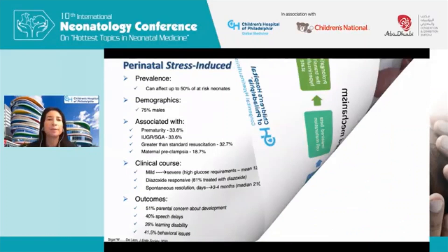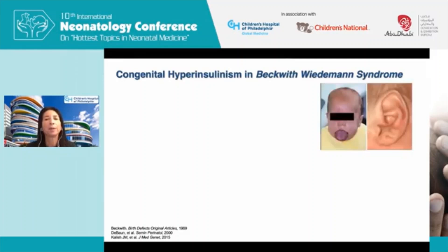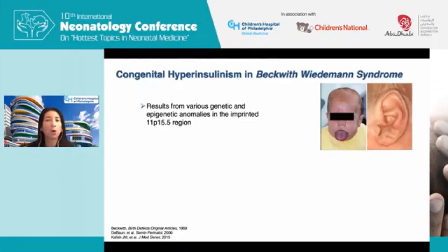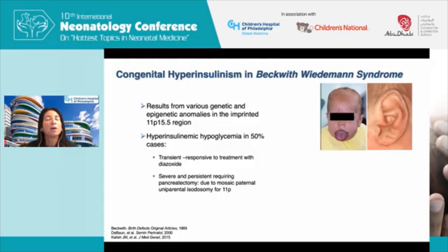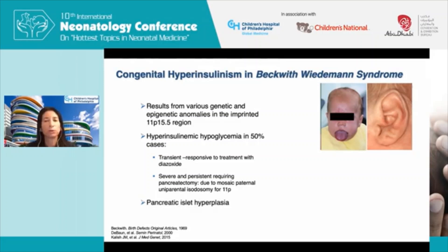Regarding congenital hyperinsulinism in Beckwith-Wiedemann syndrome: the syndrome results from various genetic and epigenetic anomalies in the imprinted 11p15.5 region, characterized by overgrowth including macroglossia, hemihypertrophy, and abdominal wall defects such as omphalocele or umbilical hernia. About 50% of babies with Beckwith-Wiedemann syndrome have hyperinsulinemic hypoglycemia. Severity ranges from transient and treatment-responsive to severe and persistent, requiring pancreatectomy. The most severe cases are commonly seen in babies with paternal uniparental isodisomy for 11p, with marked hyperplasia of pancreatic beta cells.